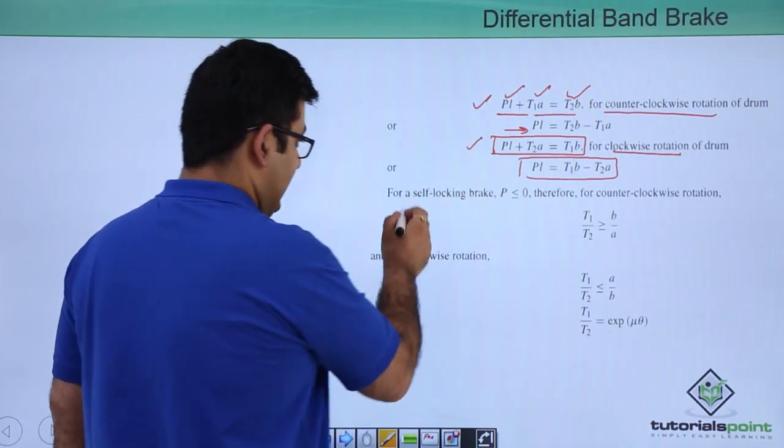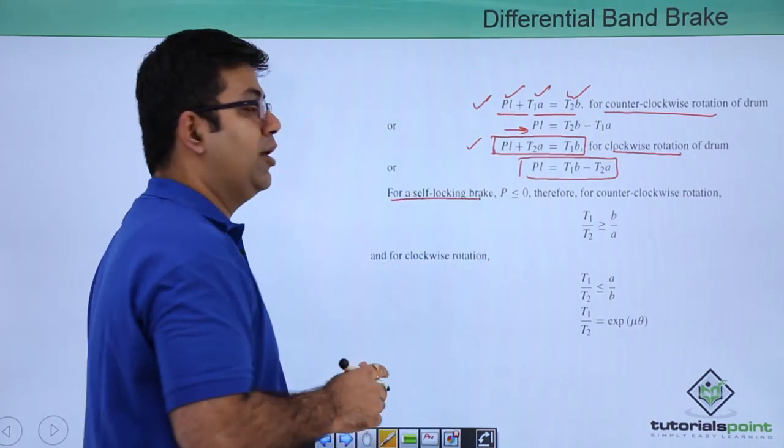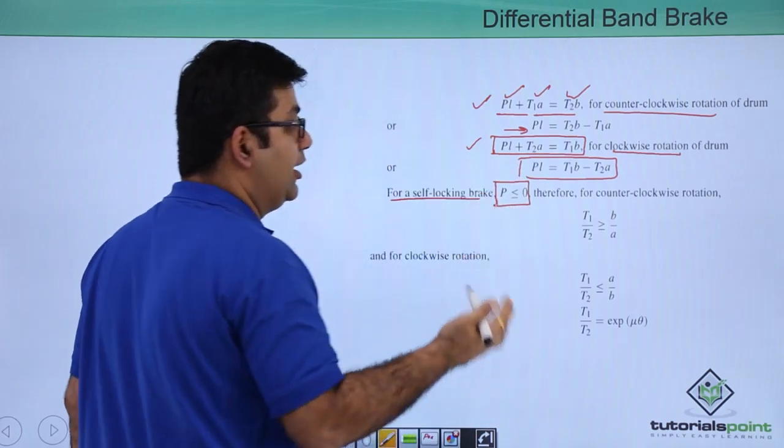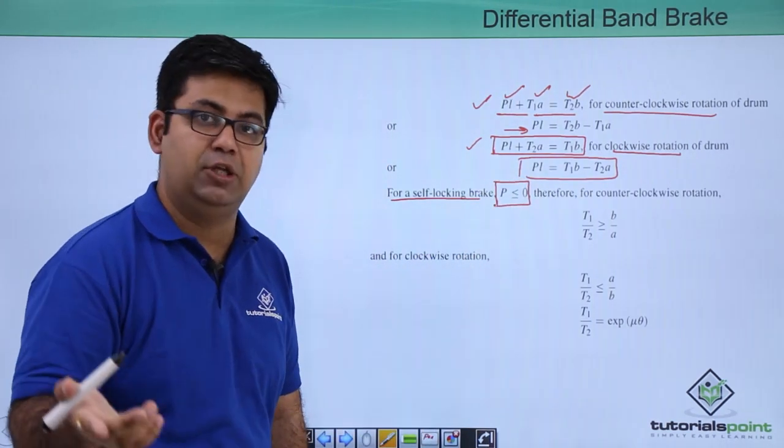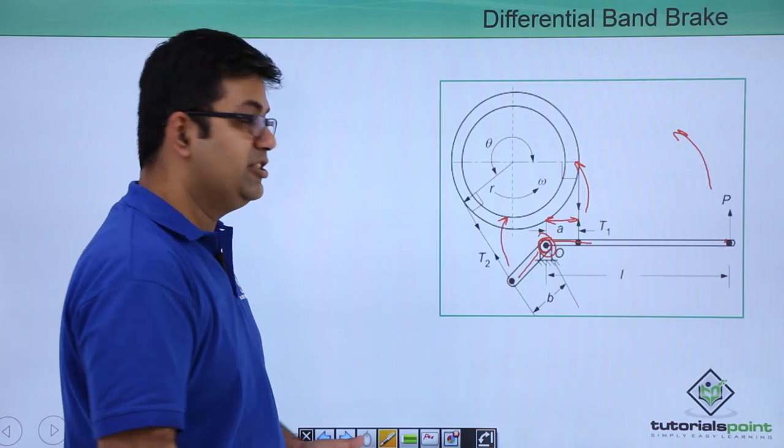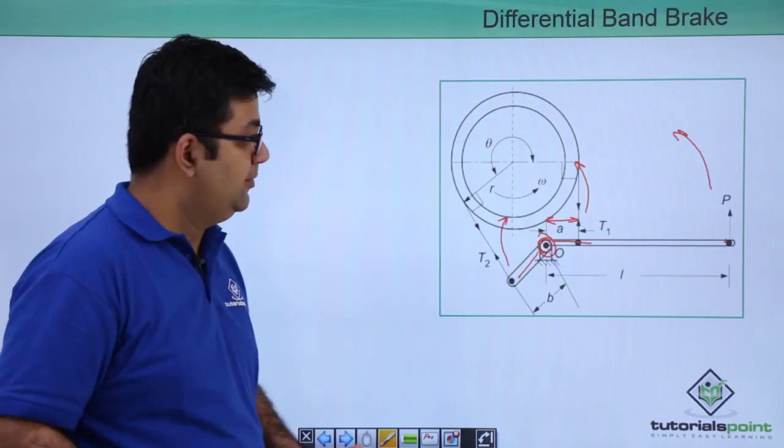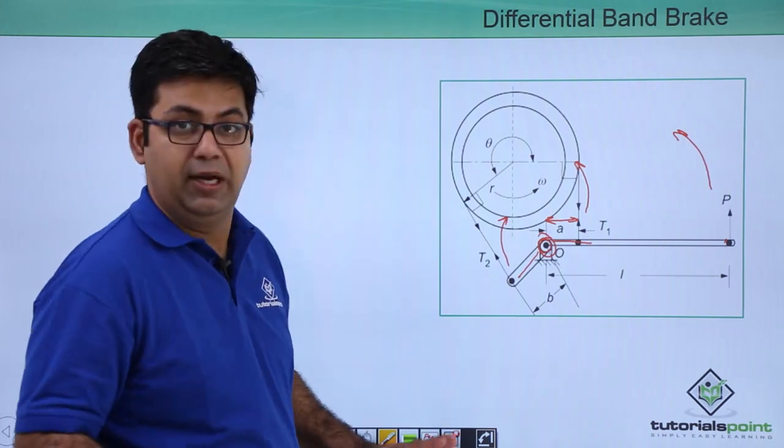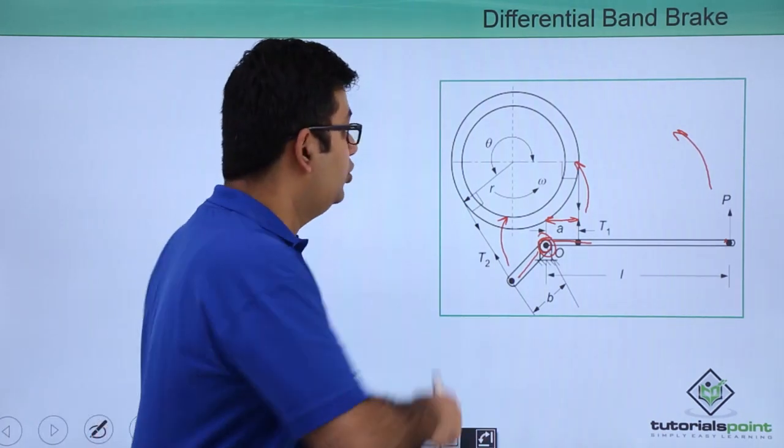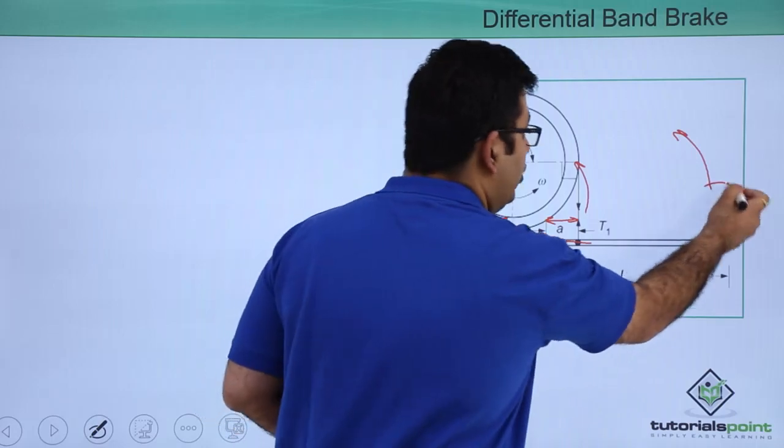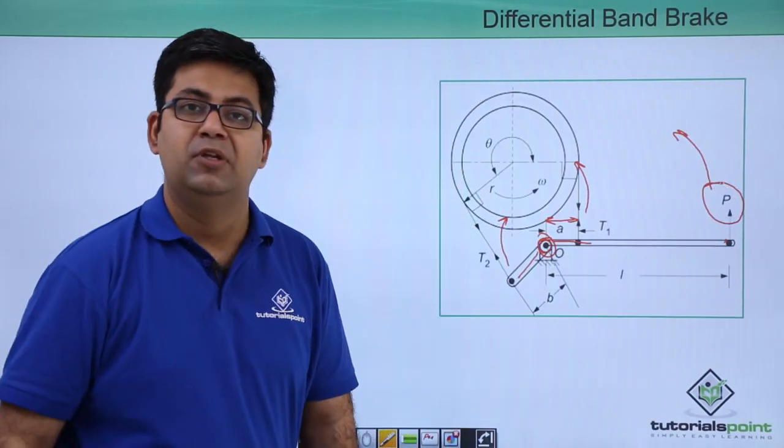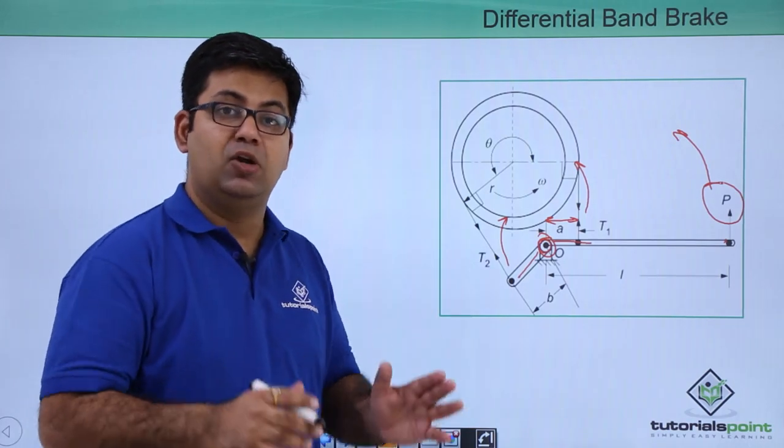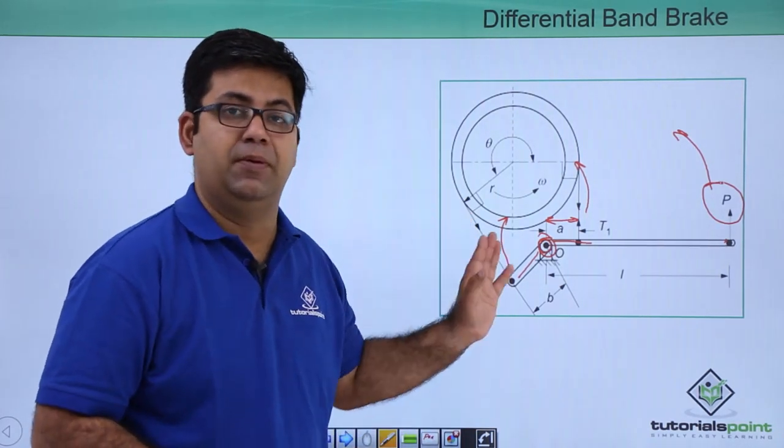Now there is something called a self-locking brake. For a self-locking brake, the load or effort required is negative, or I would say zero. What is the meaning of self-locking? Right now it is not self-locking. In order to apply brake onto this drum, I have to apply this load. The operator has to operate the brake in order to stop the rotation of this drum.